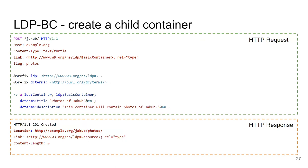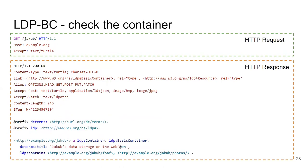You can also create a child container: again a POST, but this time in the Link header we say we are creating not a resource but an ldp:BasicContainer. So here I'm creating a container for my photos inside an existing container, and again I get 201 Created with a Location header giving the URI. When I then GET the original container I can see it now contains both the profile document and the photos container, linked via the ldp:contains predicate.